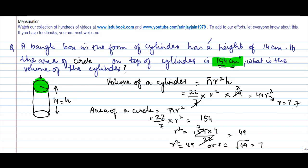Now, volume of the cylinder we calculated here was 44r², so 44 × 49, where r² is 49. If I do this calculation...